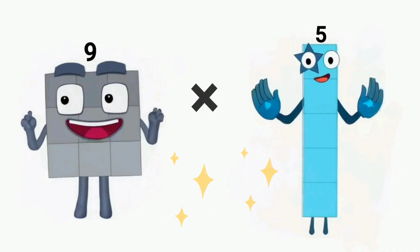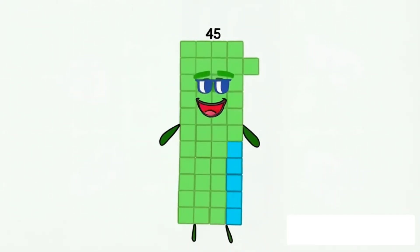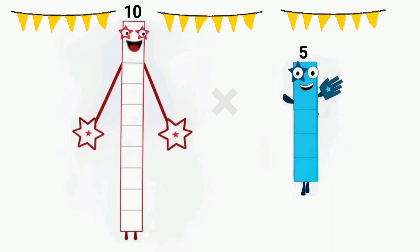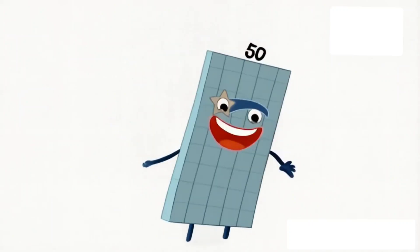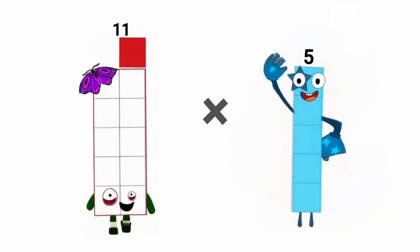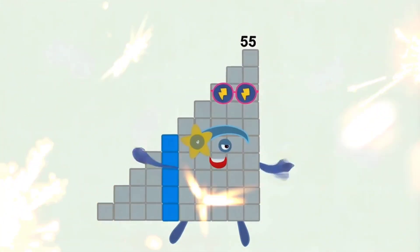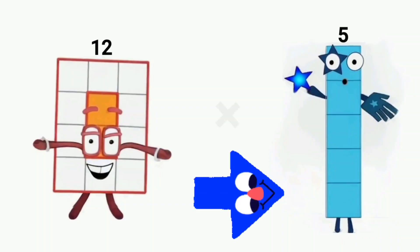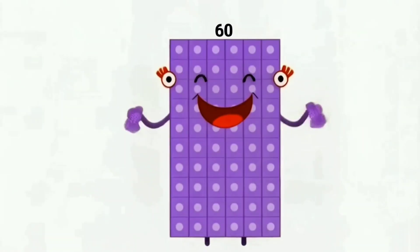9 times 5 equals 45. 10 times 5 equals 50. 11 times 5 equals 55. 12 times 5 equals 60.